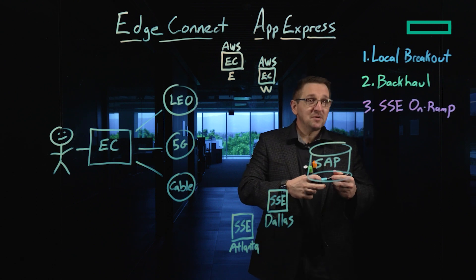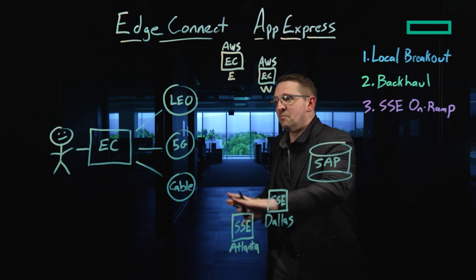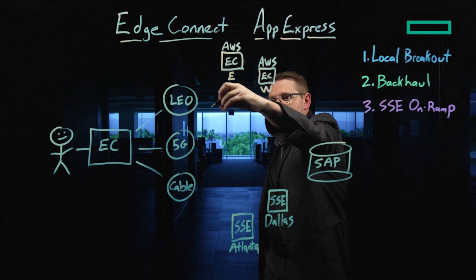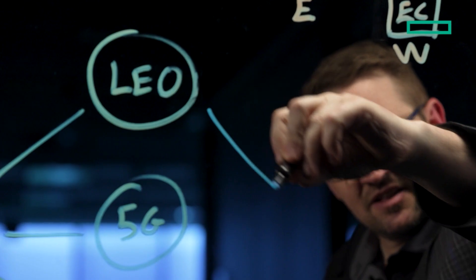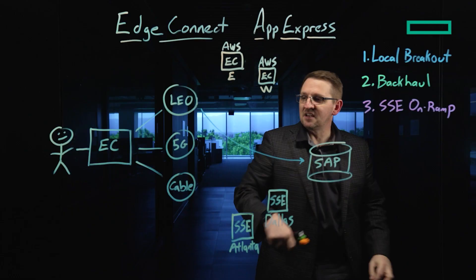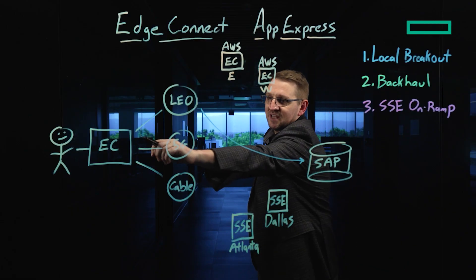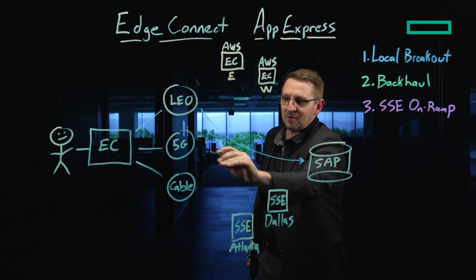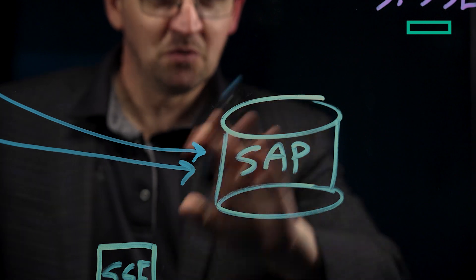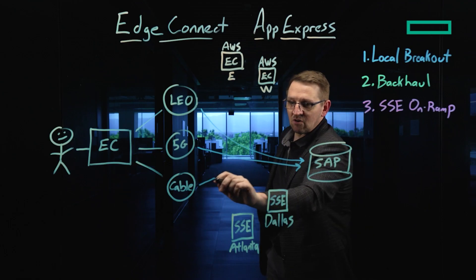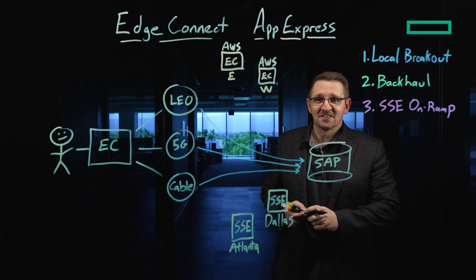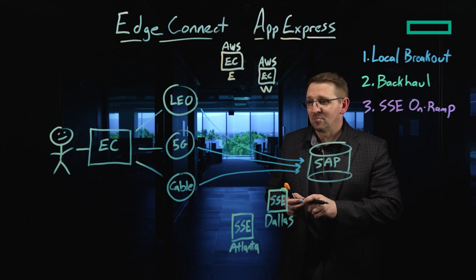AppExpress operates by pulling ahead before the user even connects to the SAP server. The EdgeConnect will start synthetically polling across each one of these connections to the SAP server — every 10 seconds it will poll across the low-earth orbit connection to SAP, across the 5G connection, and across your cable modem. You can have up to 16 different service providers supported by the EdgeConnect SD-WAN appliance.